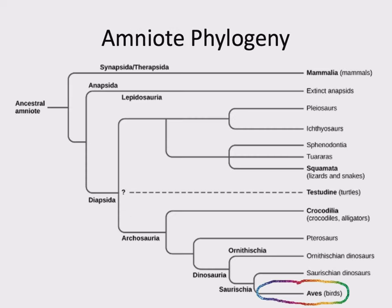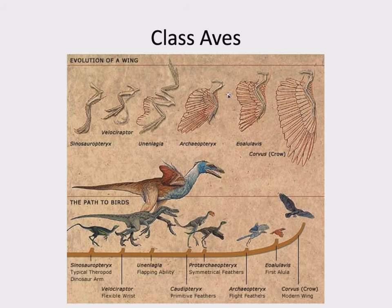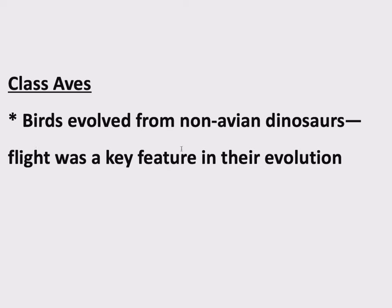Moving on to birds. Back to this amniote phylogenetic tree — there's where birds fit in. They evolved from a group of dinosaurs, and Class Aves is a straightforward monophyletic group. Their dinosaur ancestors had feathers but weren't really capable of flight. A key evolutionary innovation was asymmetrical feathers that allow for flight. There's Archaeopteryx — the first thing we consider a true bird — and then modern birds. Birds evolved from non-avian dinosaurs, and flight was a key feature and driving force in their evolution.